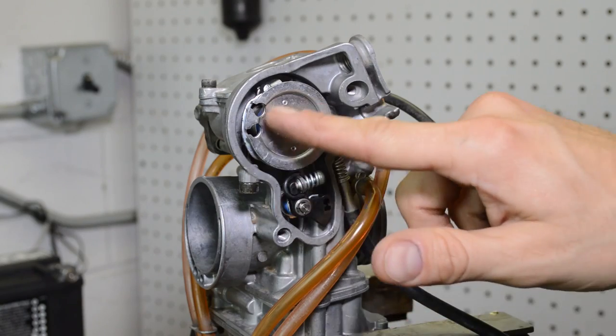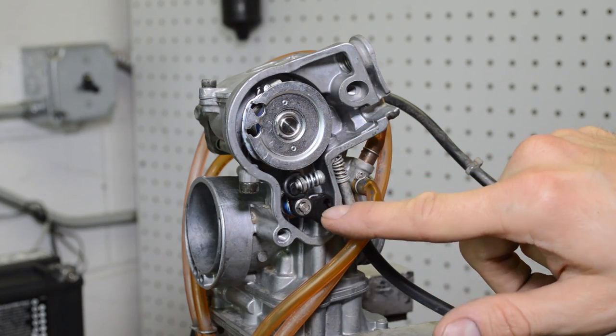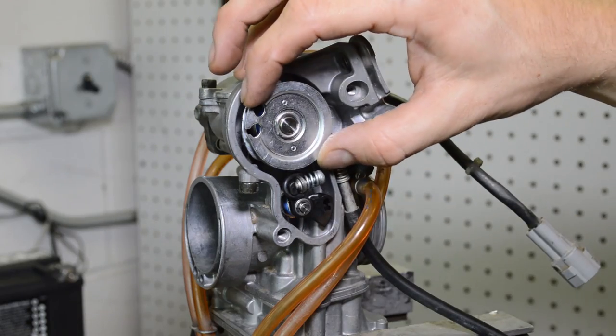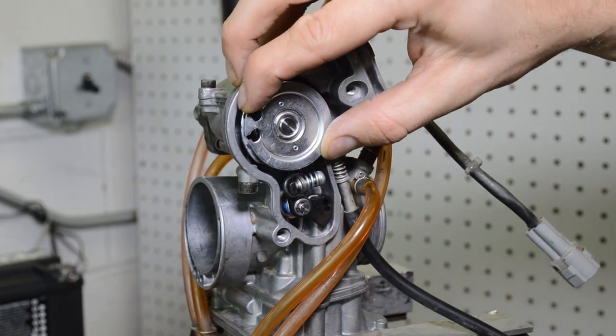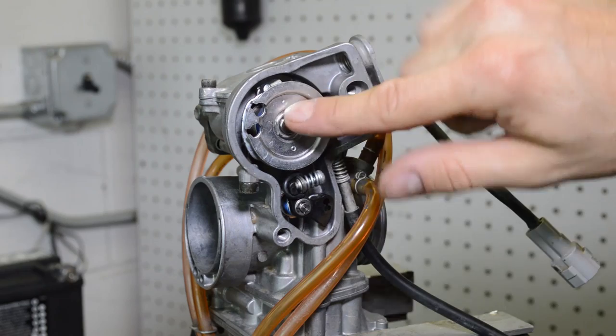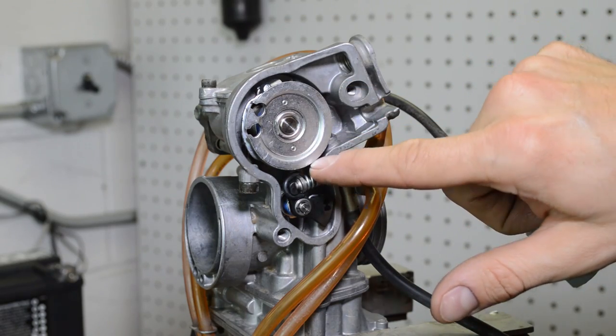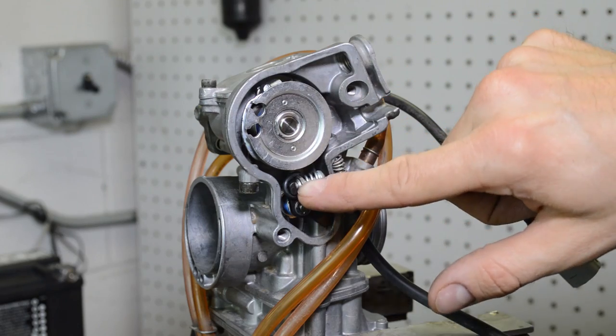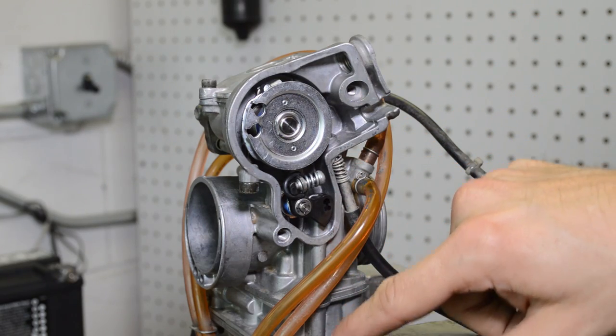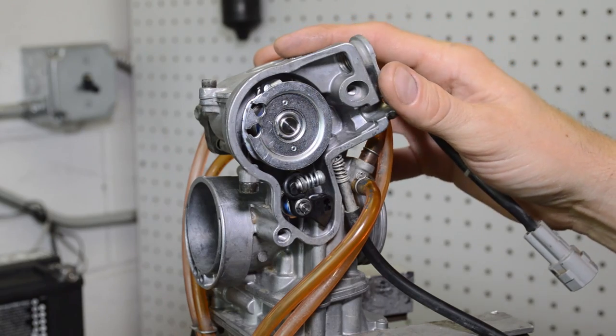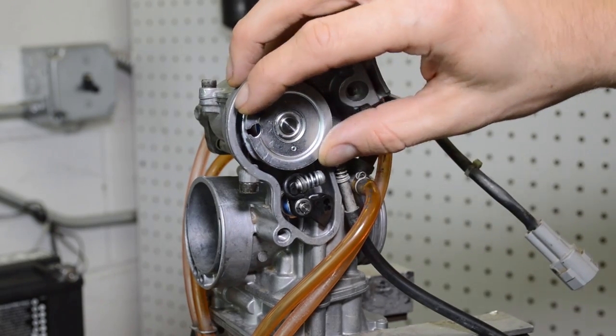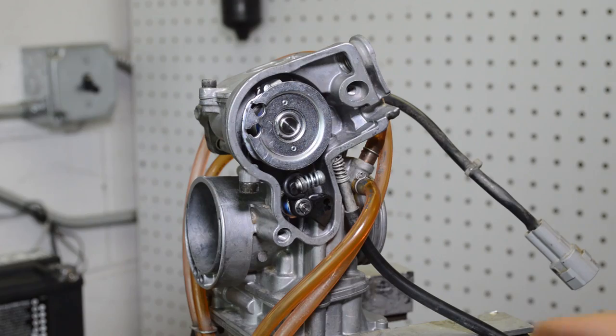All right, guys, so here's the whole mechanism that operates the accelerator pump. Basically, here's your throttle that your cables move. This is your throttle wheel. And there's a cam on the backside of this and it pushes down on this arm here. Basically, there's a rod that runs down here and pushes on a diaphragm and then it squirts fuel inside the intake.